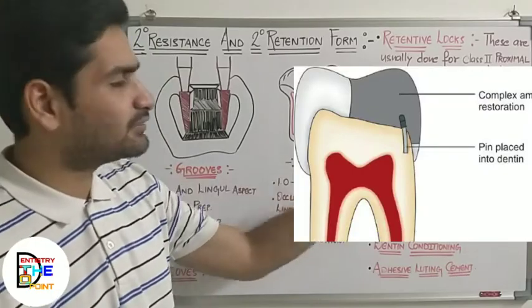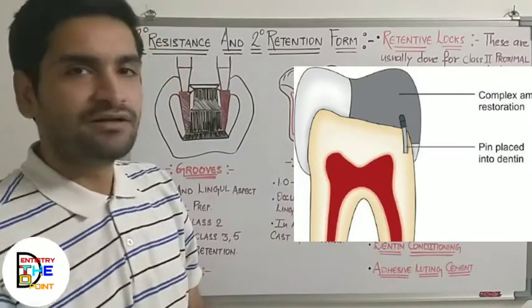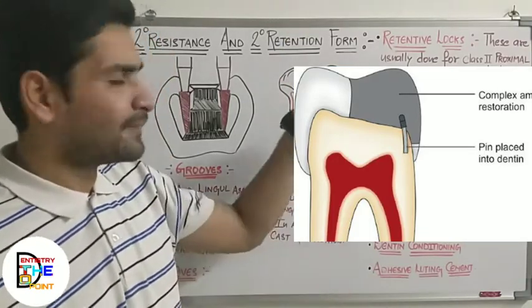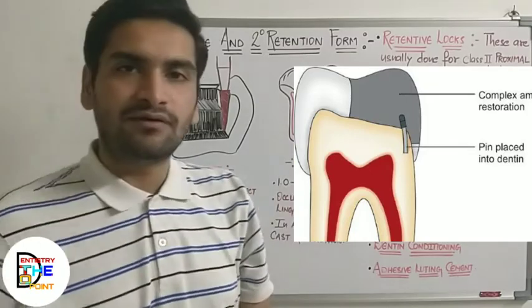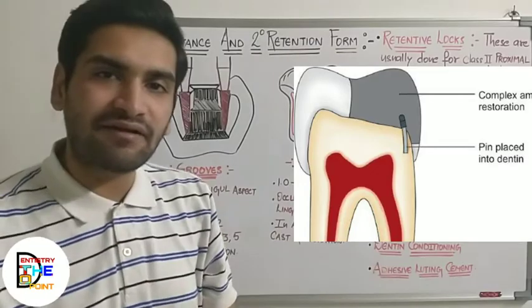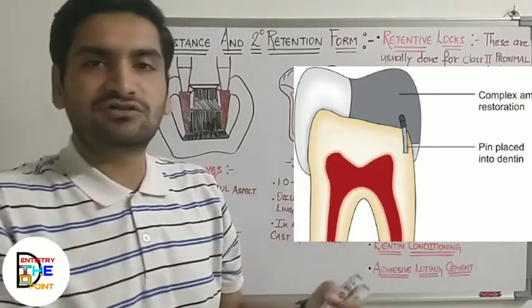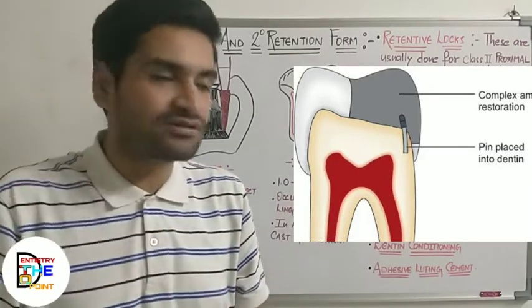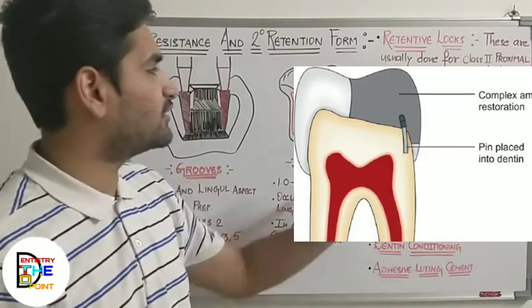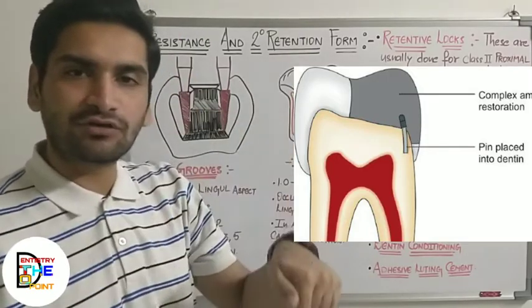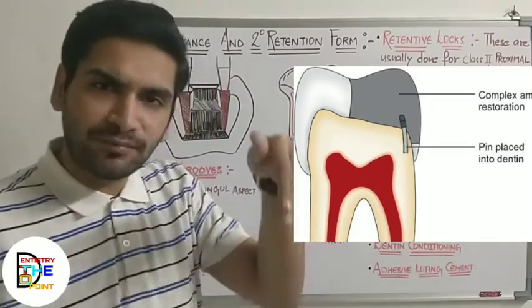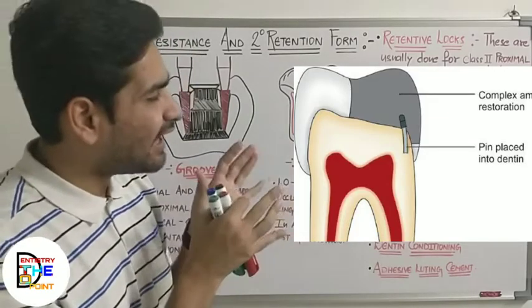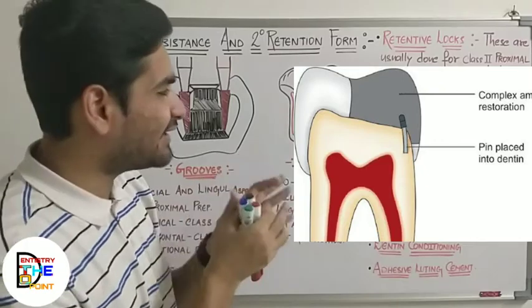Pins can be used in amalgam, composite, or cast restorations. Vertical slots are made into the dentine and pins are incorporated into the tooth before restoring the cavity. Pin-retained restorations provide additional strength and resist masticatory forces. Pins are placed 1 to 1.5mm or 0.5 to 1mm into dentine. You can see the diagram of a pin-retained restoration.